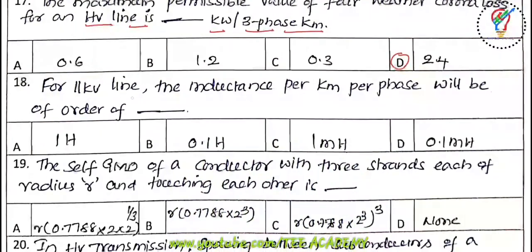Eighteenth question: for an 11 kV line, the inductance per kilometer per phase will be of the order of — options are 1 H, 0.1 H, 1 mH, and 0.1 mH. These are practical value questions. The correct answer is 1 millihenry.